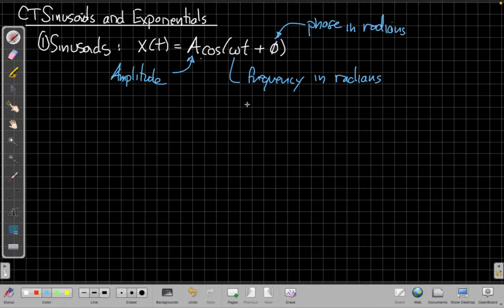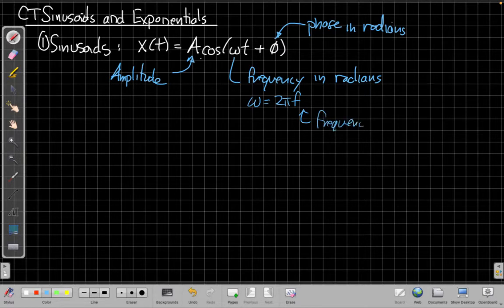And this ω, another way you can see this written sometimes, is ω = 2πf, where this f will be the frequency in hertz, which is the units of 1 over seconds, or cycles per second.